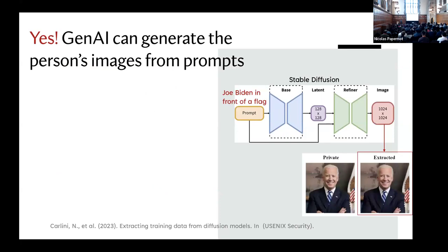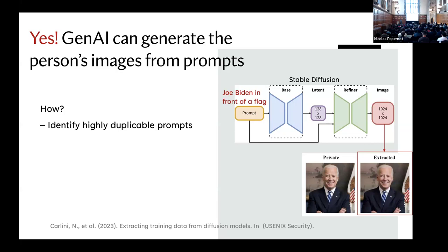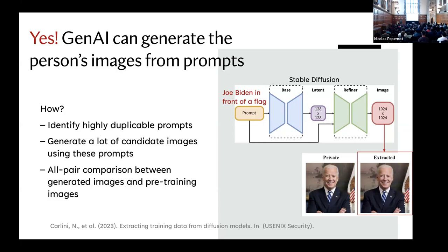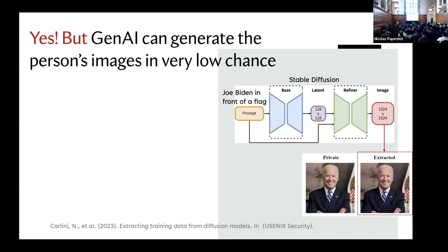There is a pioneer work in 2023 by Carlini that said yes, you can actually generate a person's image from prompts. Specifically, they achieved this by first identifying some highly duplicable prompts, then generating a lot of candidate images using these prompts, and then doing an all-pair comparison between the generated images and the whole training set using CLIP similarity.